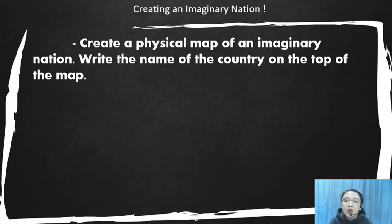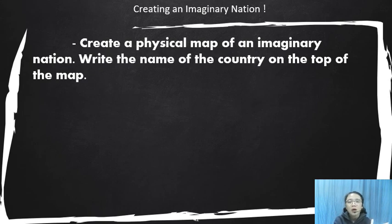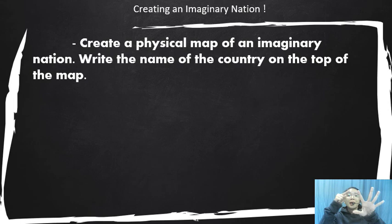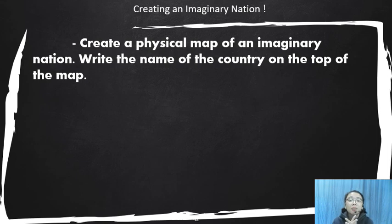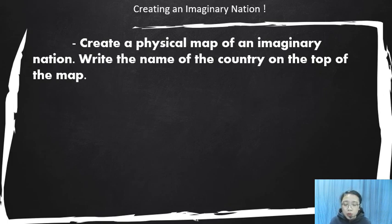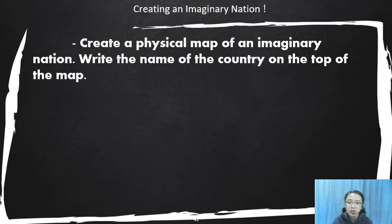You should also include major cities, including the capital. The number of cities corresponds to the number of your group members — think of creative names for them. Also include how many people can live in your nation, such as 1,000, 2,000, or 3,000. Major cities are designated by a large black dot, and the capital is designated by a star.